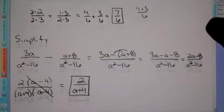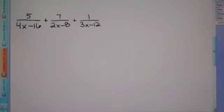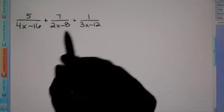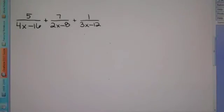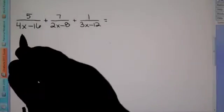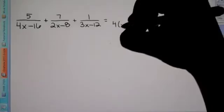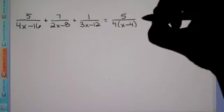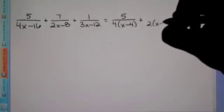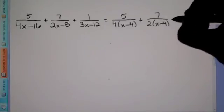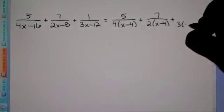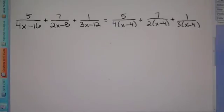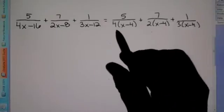Now our second example has three fractions. We need to figure out what is our common denominator because they all look different — we have to get them all looking the same. I'm going to factor the bottom to see what we need for a common denominator. I took a 4 out of the first, factor out a 2 from the second to get 2 times x minus 4, and factor out a 3 from the third to get 3 times x minus 4. So they all have x minus 4, but we have a 4, a 2, and a 3.